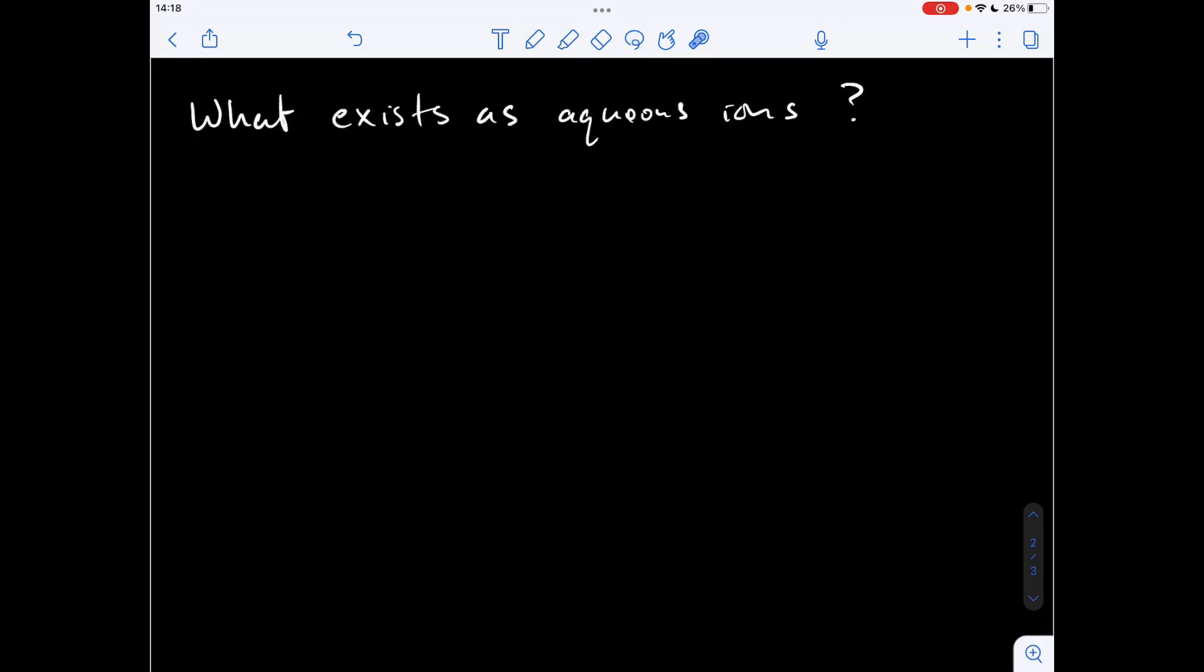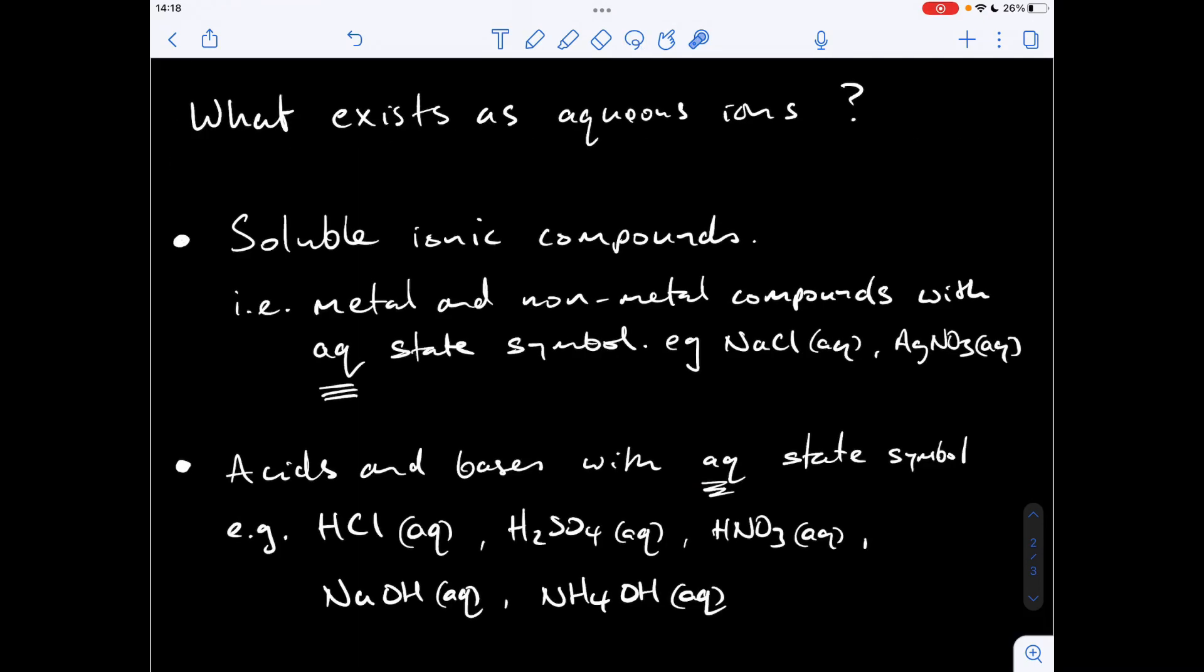How do you know if something exists as aqueous ions? Well, there are two scenarios. So the first one is soluble ionic compounds. So how do you know it's ionic? It's a metal bonded to a non-metal in a compound. How do you know it's soluble? It has the aqueous state symbol. So the examples I've got here are the ones in that equation we've just seen. Aqueous sodium chloride and aqueous silver nitrate.